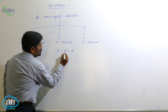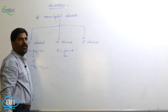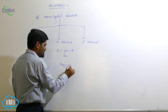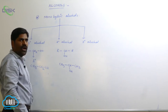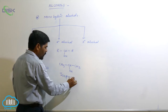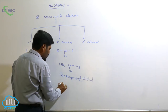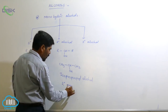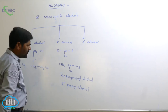Secondary alcohol means the central carbon is connected to two carbon atoms — R indicates a carbon — so the central carbon connected to two carbons is known as secondary alcohol, or two-degree alcohol. The example for two-degree alcohol is CH3-CH(OH)-CH3. The central carbon connected to the OH group is known as isopropyl alcohol, or secondary propyl alcohol, because the OH group is connected to a secondary carbon.